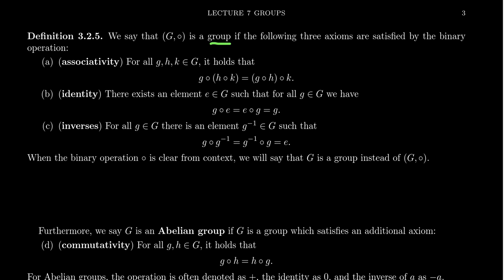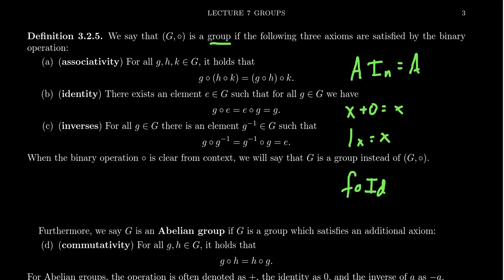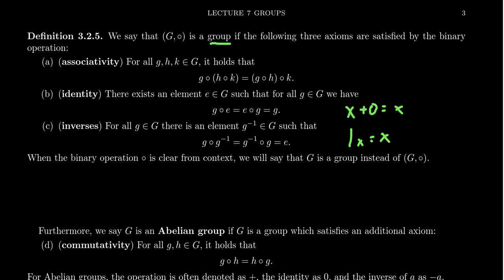This is familiar from many contexts: for addition, X plus 0 equals X, where 0 is the additive identity. For multiplication, 1 times X equals X, so 1 is the multiplicative identity. For matrix operations, A times the identity matrix equals A. And for functions, F composed with the identity function — which maps X to X — gives back F. So in a group, we require that the operation has an identity element.